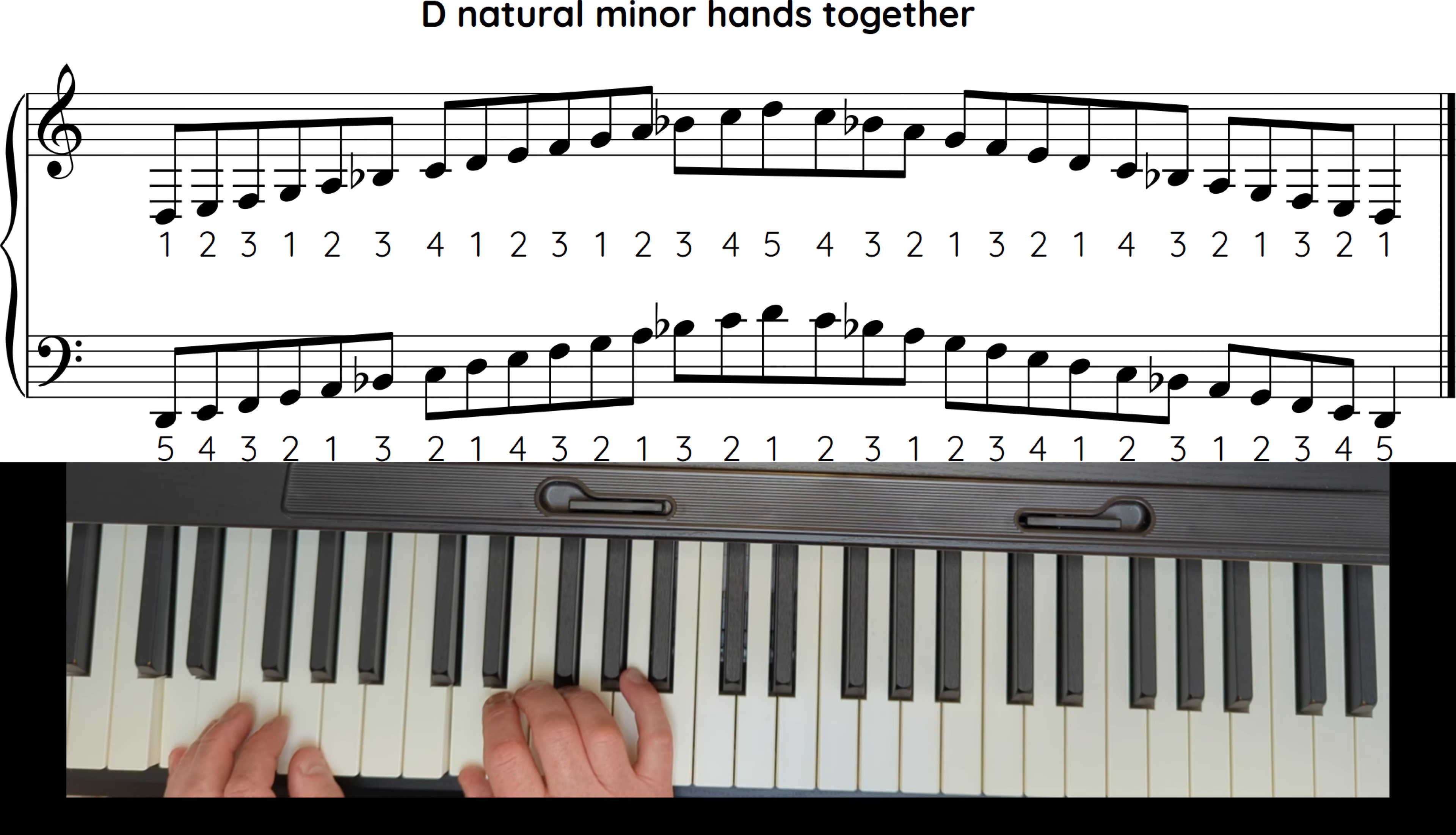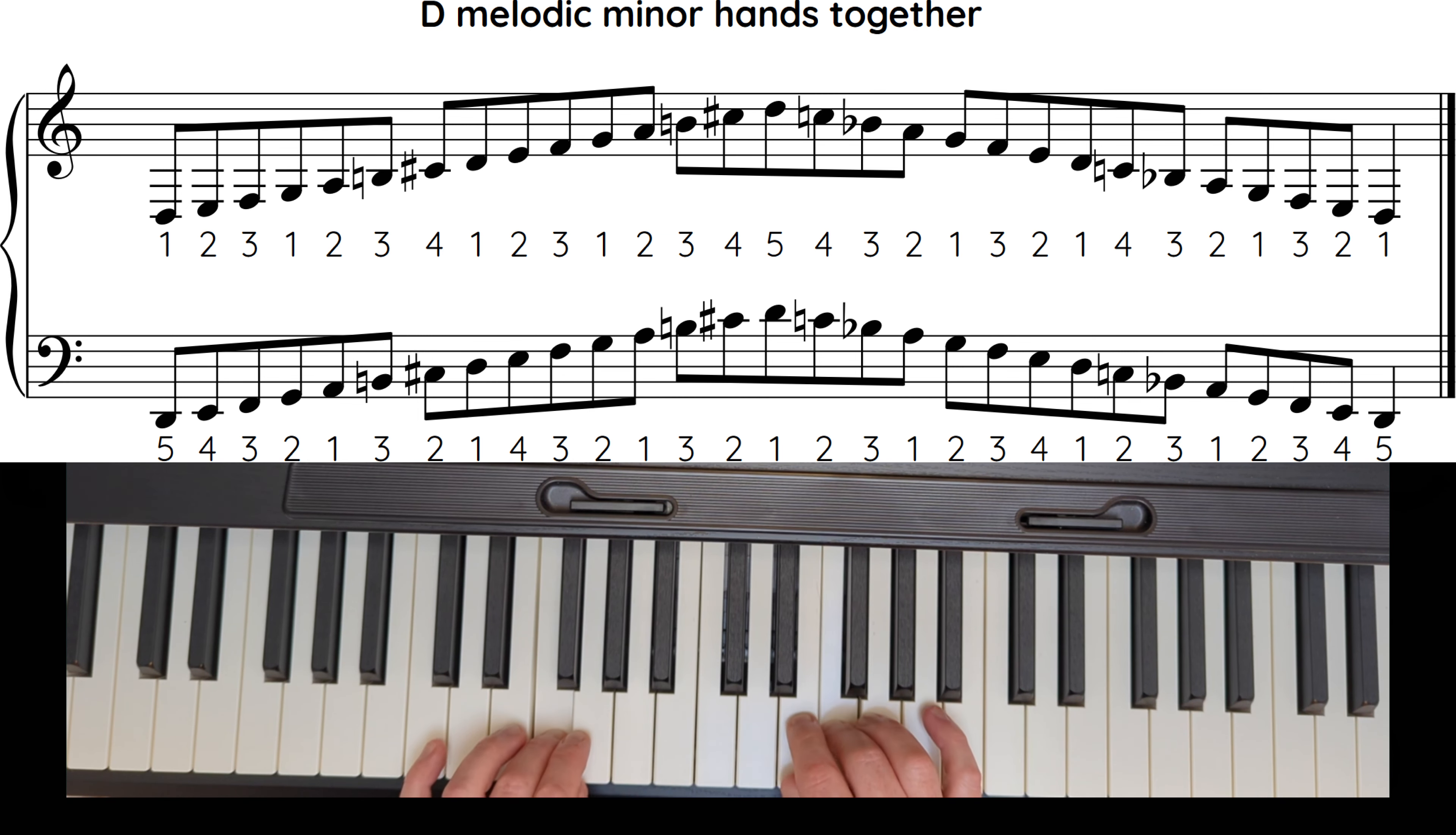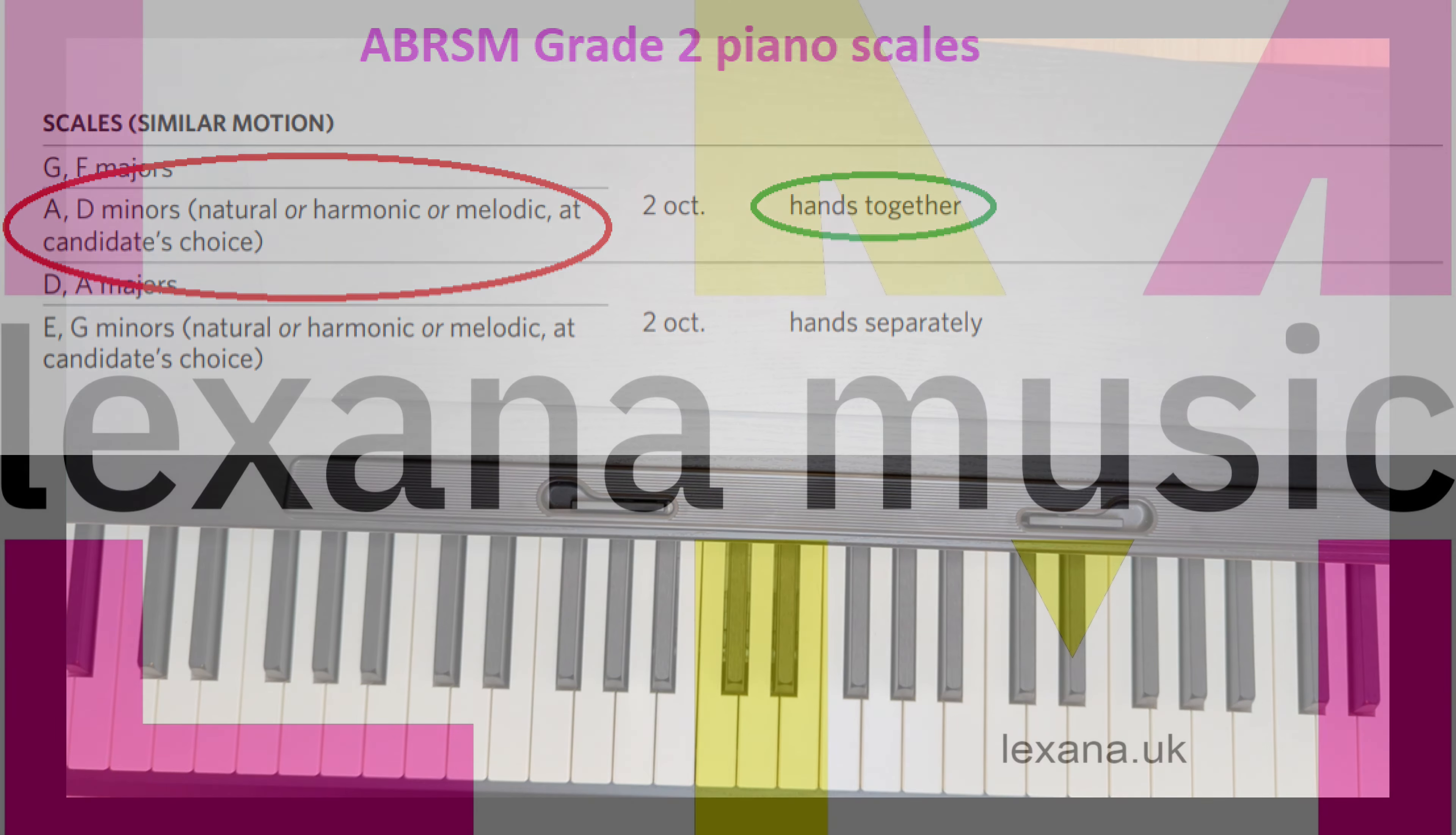And lastly in this section, D minor melodic. And remember with the minors, you have to pick one of the three: either natural, harmonic, or melodic. Talk to your teacher. Most people I know tend to do the harmonic minor. Thank you for listening.